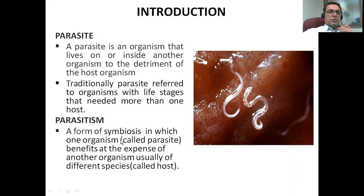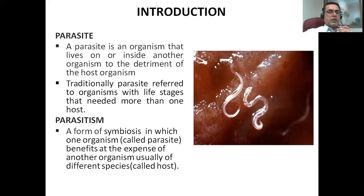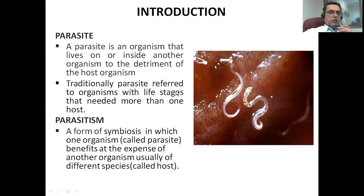Parasitism is a form of symbiosis in which one organism, called the parasite, benefits at the expense of another organism — usually of a different species — called the host. Many parasites depend upon different hosts for nutrients and survive inside these hosts. Many parasites have the ability to get into the host and multiply there. Some parasites have multiple hosts; others have a narrow range of hosts.